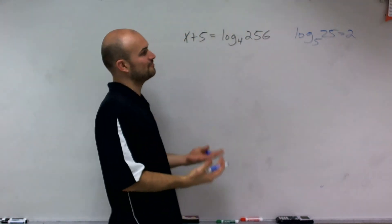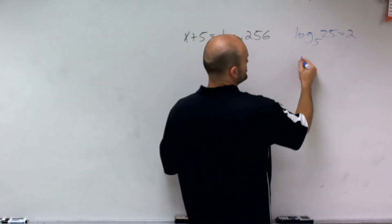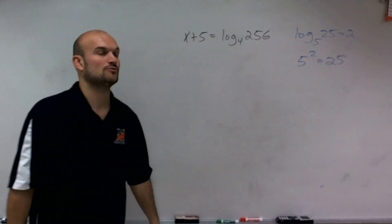So logarithms, remember, say base 5 raised to what power gives me 25. We know the answer is 2. So by rewriting that in exponential form, I can just say 5 squared equals 25.